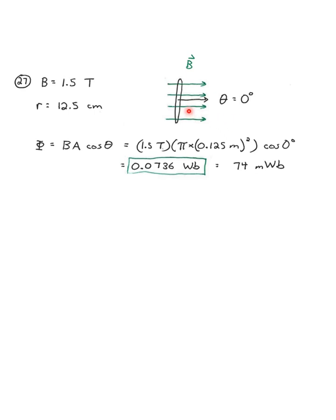It's the angle between a vector perpendicular to the loop and the magnetic field itself, so 0 degrees. Radius is 12.5 centimeters. The question is simply, what is the flux through the loop? So flux is B times A times cosine theta. Plug those in, area is pi r squared, and you should get 0.0736 V or 74 millivabers.